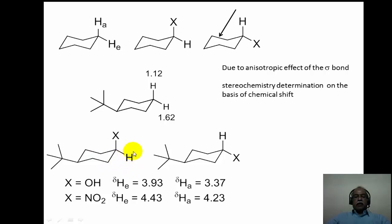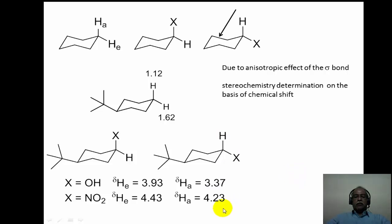The equatorial hydrogen isomer is identified with a chemical shift value of 3.93, whereas the axial hydrogen isomer corresponds to a chemical shift of 3.37. The isomer showing a higher delta value corresponds to the equatorial hydrogen (axial X substituent) — which is the cis configuration — while the lower delta value corresponds to the axial hydrogen (equatorial X substituent), i.e., the trans isomer. This is very useful for identifying cis-trans isomers.